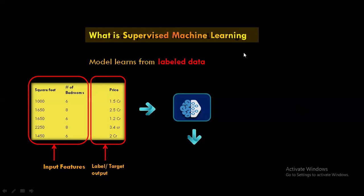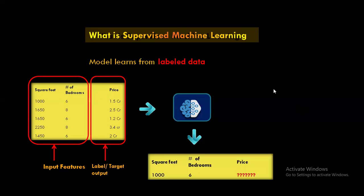Why is it called supervised? Because like how we teach a kid with question and answer, we train the model with both the input as well as the output feature. Hence it is called a supervised machine learning technique.